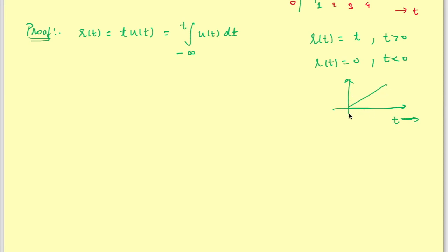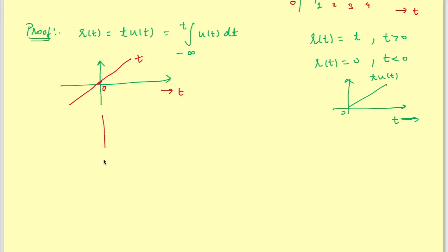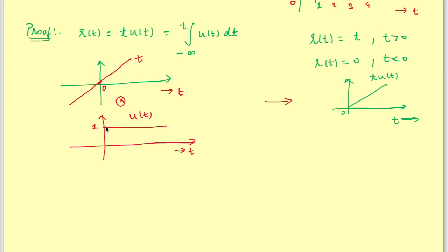The ramp signal looks like this along the time axis — it equals t·u(t). To plot it, I first plot the line t, then multiply it by the unit step signal u(t). The line t passes through the origin, and u(t) is 0 for t less than 0 and 1 for t greater than 0.